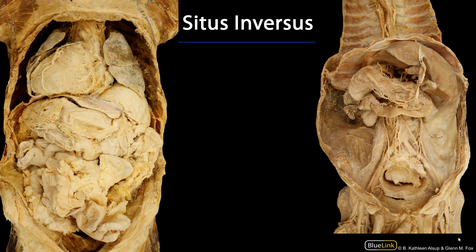Situs inversus totalis has about a 1 in 10,000 incidence in live births, but typically it's associated with dextrocardia — that would be the apex of the heart and most of the substance of the heart being to the right of the body rather than the left.